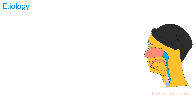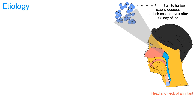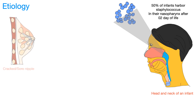The nasopharynx of an infant harbors Staphylococcus aureus in 50% of cases. When breastfeeding on a sore or cracked nipple, this bacteria may cause an ascending infection.